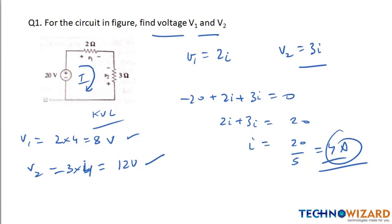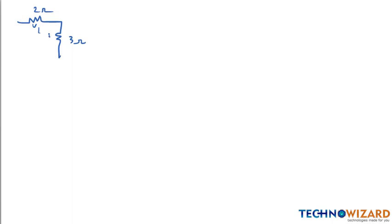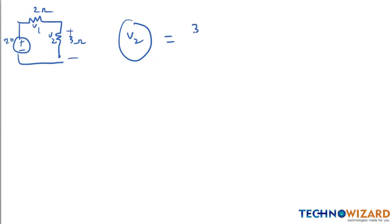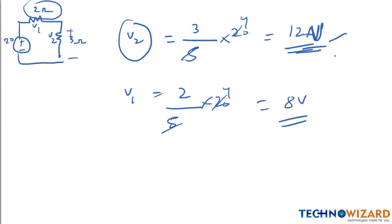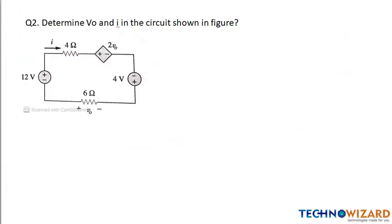We can also calculate this using the voltage divider rule. Redrawing the circuit: 2 ohm and 3 ohm resistors with a 20 volt source. For V2 across the 3 ohm resistor: V2 equals 3 over (2+3) into 20 equals 12 volts. For V1 across the 2 ohm resistor: V1 equals 2 over 5 into 20 equals 8 volts. Both methods give the same answer, confirming how KVL and the voltage divider formula can be applied to any circuit.